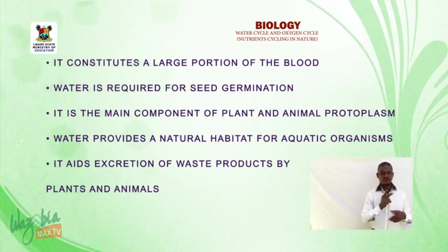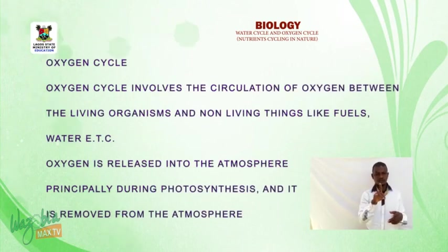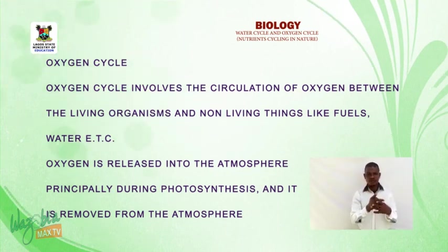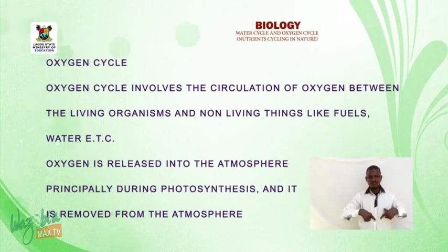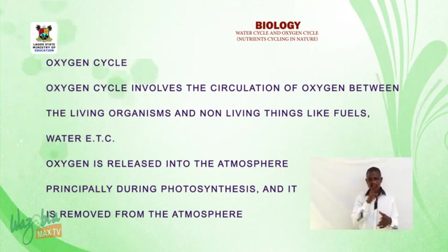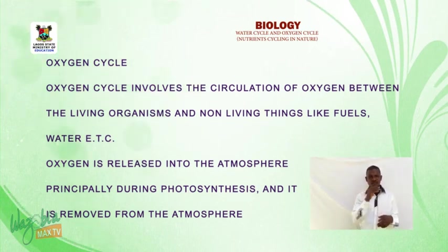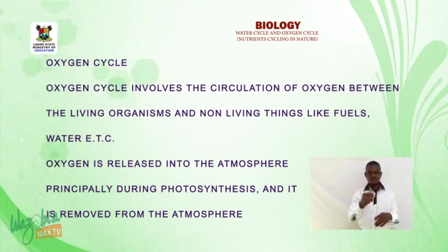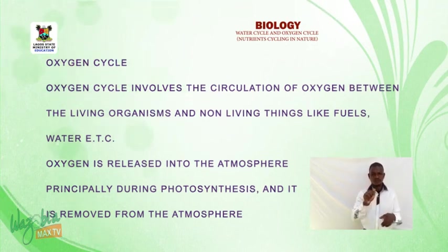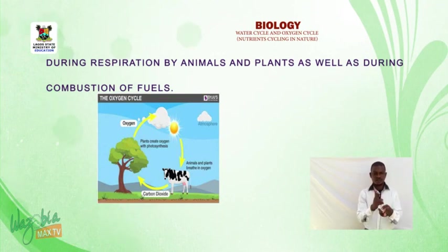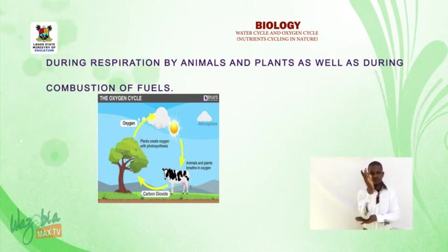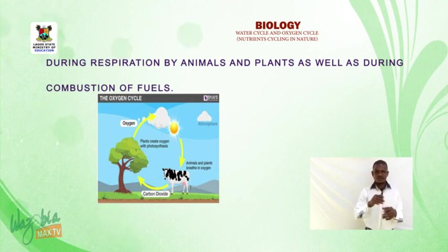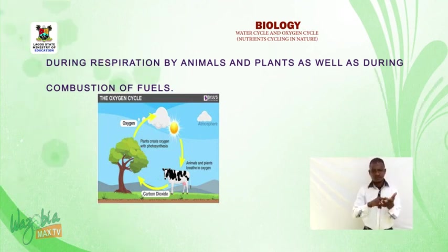Oxygen cycle involves the circulation of oxygen between living organisms and non-living things like fuels and water. Oxygen is released into the atmosphere principally during photosynthesis, and it is removed from the atmosphere during respiration by animals and plants, as well as during combustion of fuels. Look at the diagram of oxygen cycle and take note of the direction of the arrows.